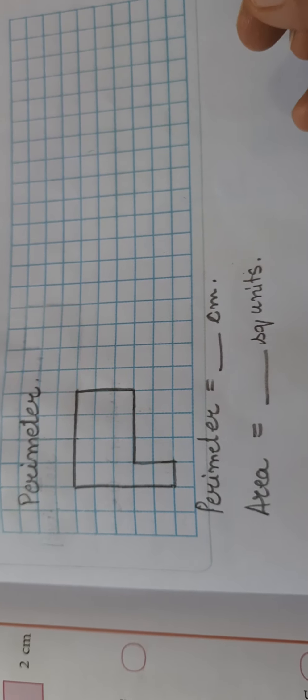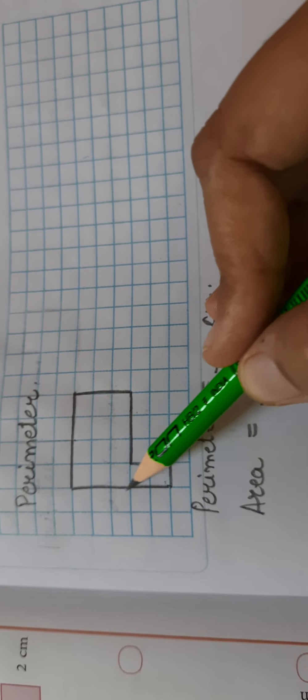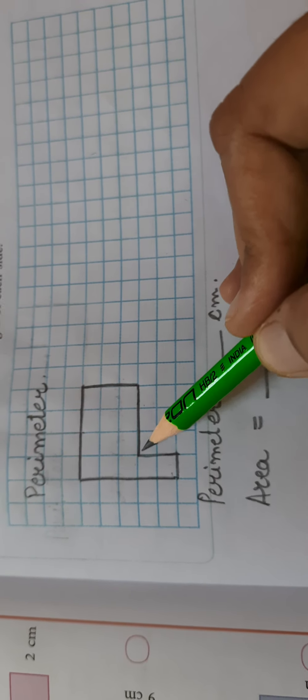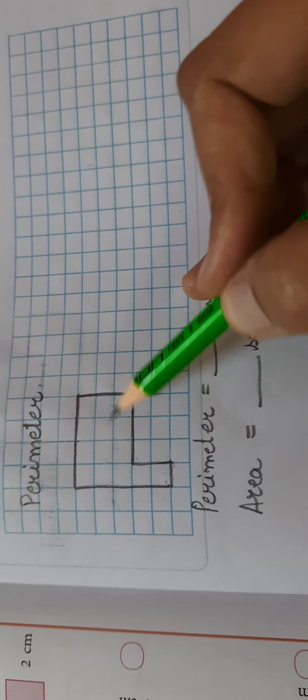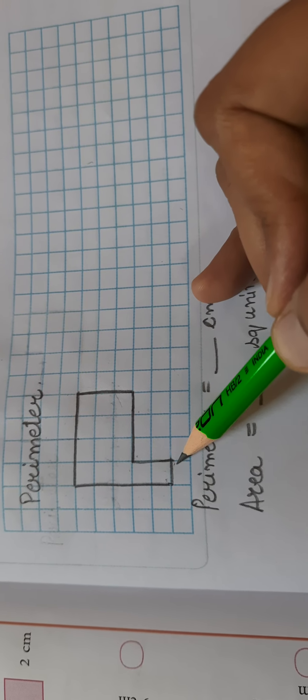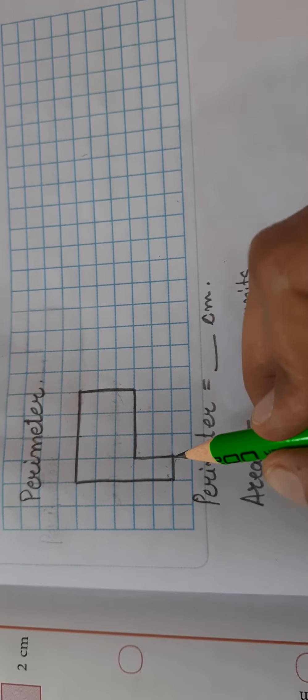Let's suppose I have drawn this 2D shape on this square block sheet. Now when I am calculating the perimeter here, this boundary what I have drawn here, I have to calculate the blocks present only on the boundary or touching the boundary of this shape.